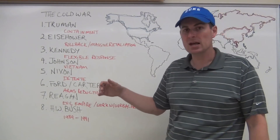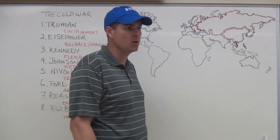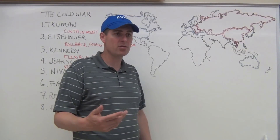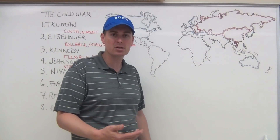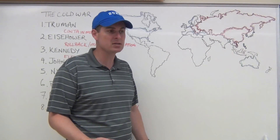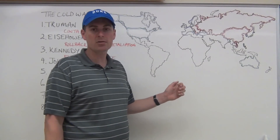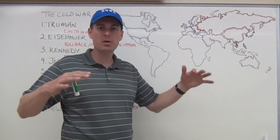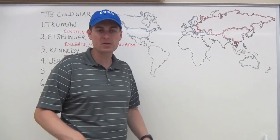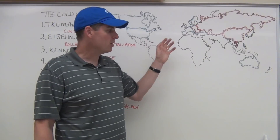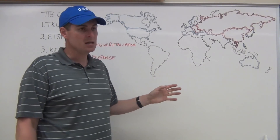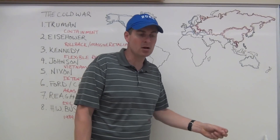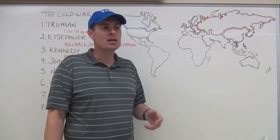On to Kennedy, whose big idea is flexible response — arguing that more nuclear weapons can't solve everything, as shown by the folly of Hungary. This includes things like the Alliance for Progress, a kind of mini Marshall Plan to help Latin America economically so it won't become communist. It also involves counterinsurgency forces and the start of special forces to fight communist guerrillas without getting into large-scale conventional warfare. Kennedy also escalates U.S. involvement in Vietnam somewhat, building on slight involvement that began under Truman and Eisenhower.